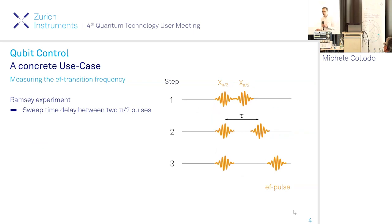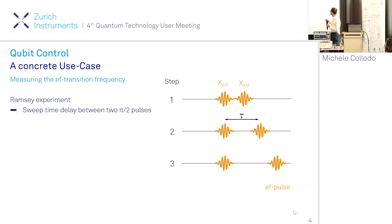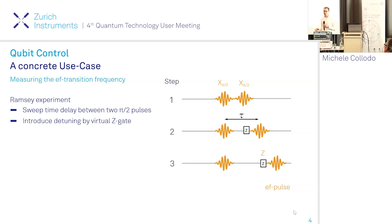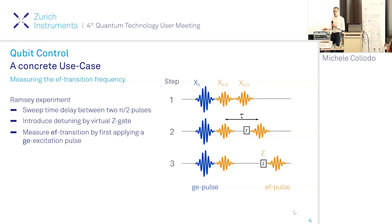Now let's look at a concrete use case to study the anatomy of the pulses for an experiment. We want to measure the EF transition frequency in a qubit. We can do this with a Ramsey-type experiment. We sweep the time delay between two pi-half pulses, and to make the data analysis more robust, we do this in a frame detuned to the qubit frequency by introducing virtual Z gates. Since we're measuring the EF transition, we first bring the qubit to the excited state by prepending a GE pi pulse at the beginning of each shot.